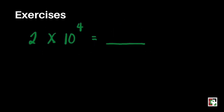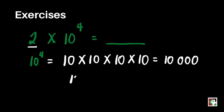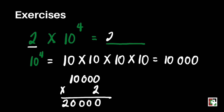We have the next one: 2 times 10 to the 4th power. Since 2 has no exponent, we proceed to 10 to the 4th power. 10 to the 4th power is 10 times 10 times 10 times 10, which equals 10,000. Now we perform: 10,000 times 2 gives us 20,000. That's so easy!